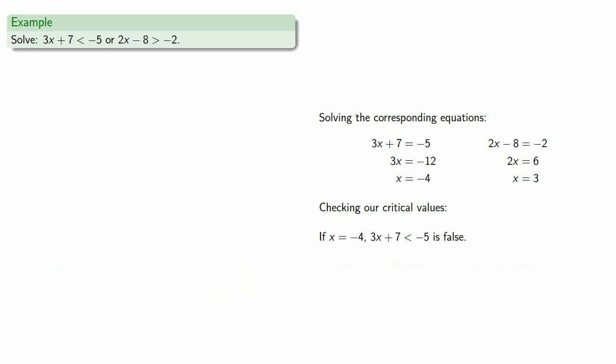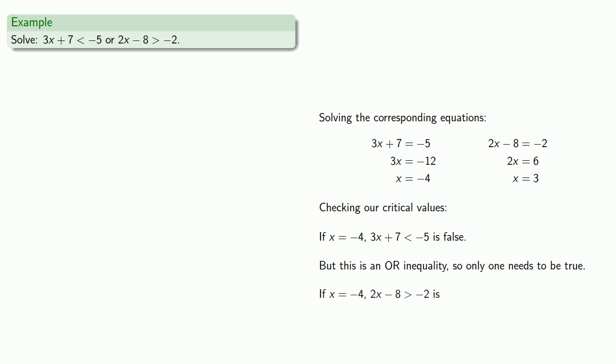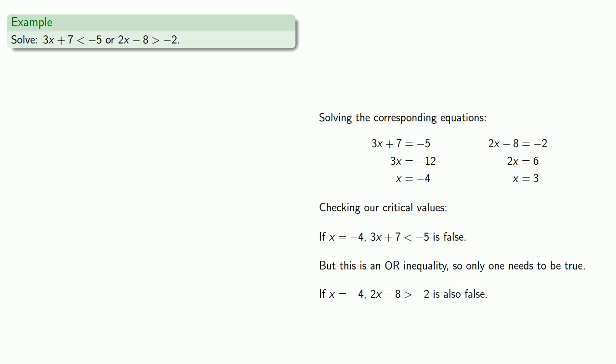But because this is an OR inequality, only one of the inequalities needs to be true. So maybe our other inequality is true — let's check it out. If x equals negative 4, 2x minus 8 greater than negative 2 is also false. So x equals negative 4 fails both inequalities, and so we exclude x equals negative 4.